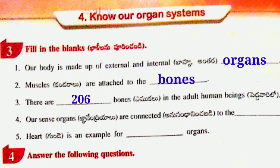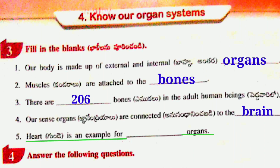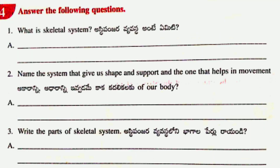Fourth: Our sense organs are connected to the Brain. Fifth: Heart is an example for Internal Organs.